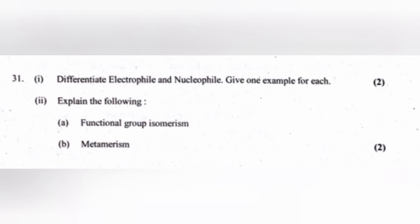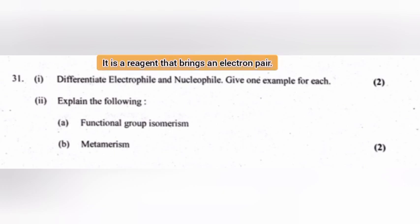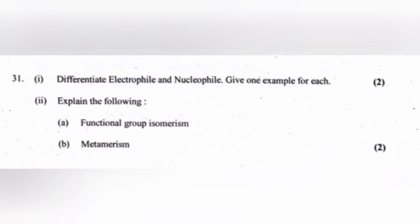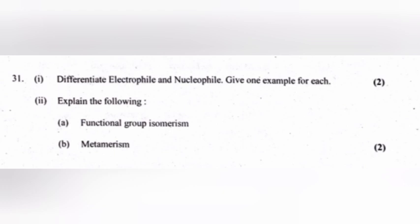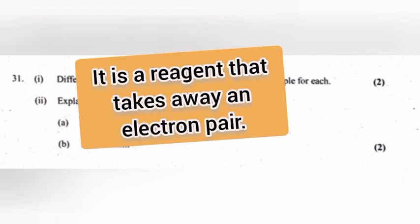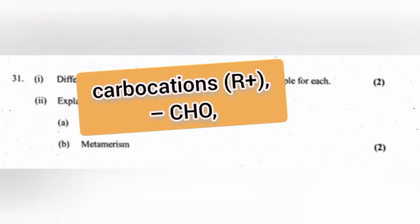Differentiate nucleophile and electrophile; give one example for each. Nucleophiles: reagents that bring an electron pair. Example: Br⁻, H2O, NH3 (write one). Electrophiles: reagents that take away an electron pair. Example: carbocations, CHO+, etc.